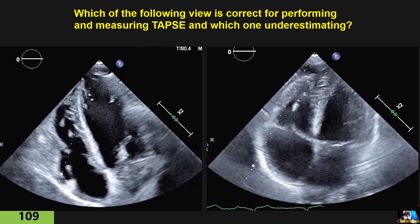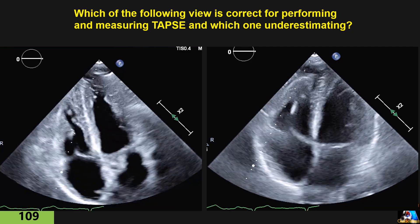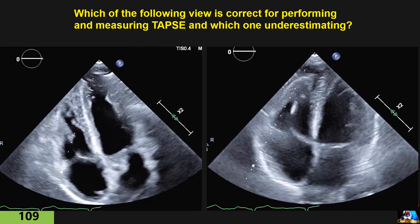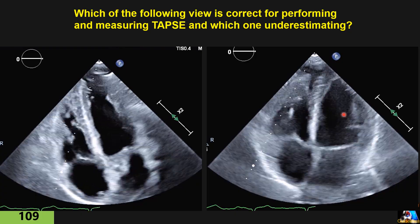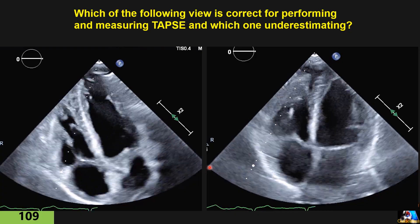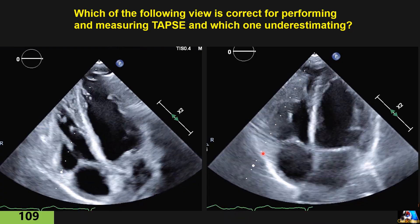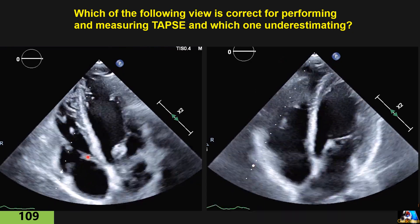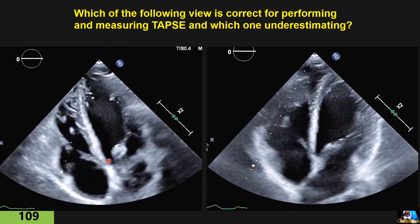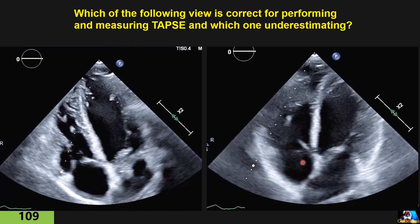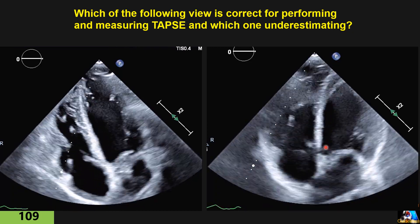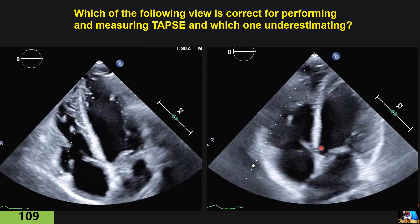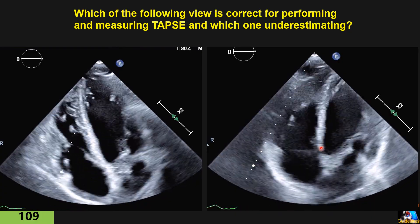First question: we are doing TAPSE with two different views — off-axis medial, where the probe is moved a little medially and a little higher, and an RV-focused view. Which one is correct for TAPSE, and which one underestimates the RV measurement?